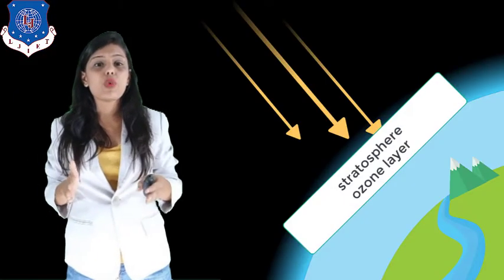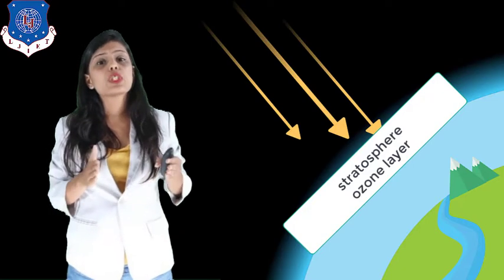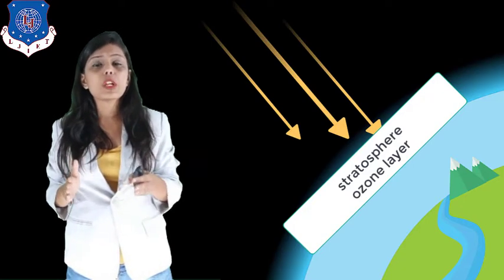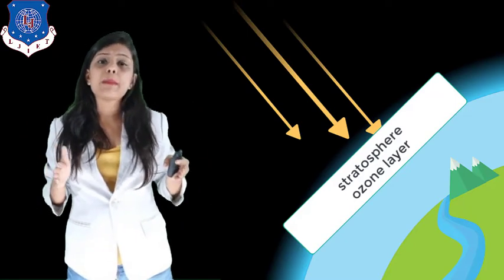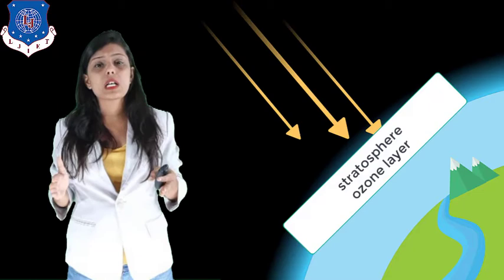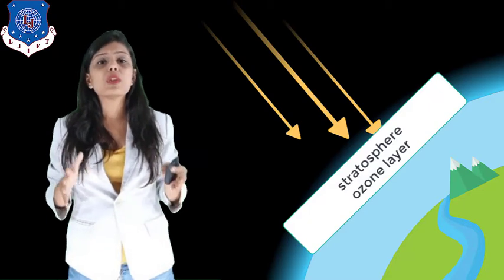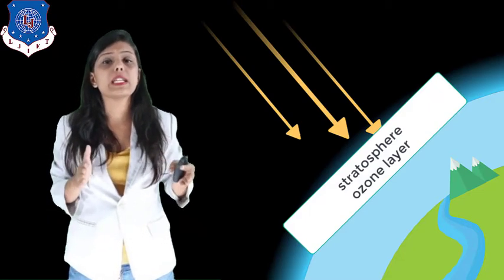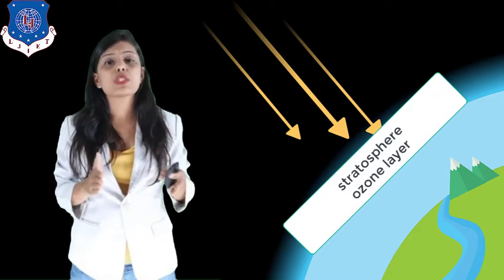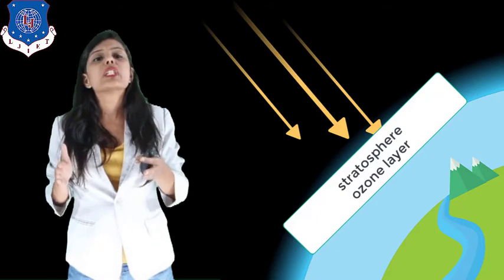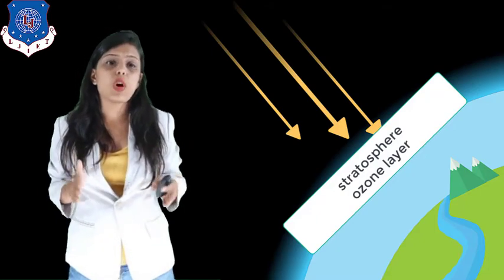The second layer, known as the stratosphere, is 20 to 25 kilometers above the surface of the earth. It holds a very important shield that protects us from the sun's harmful ultraviolet radiation and lets only good waves pass through. This shield is known as the ozone layer.